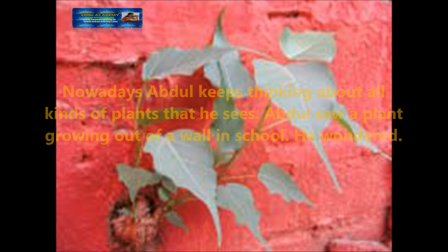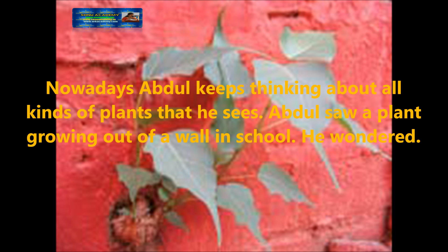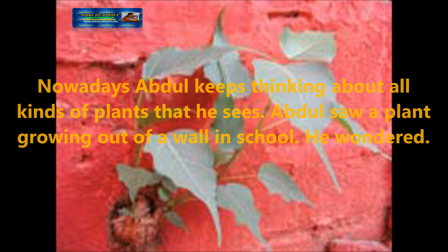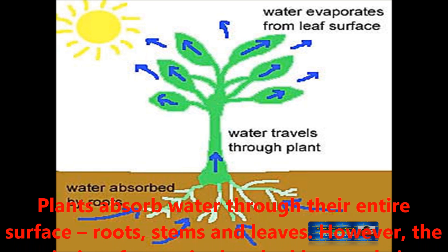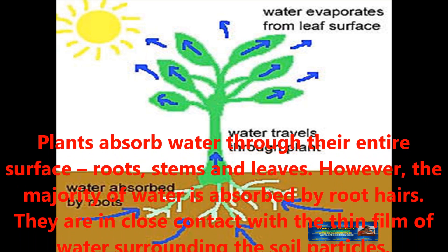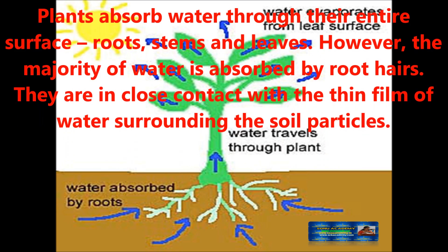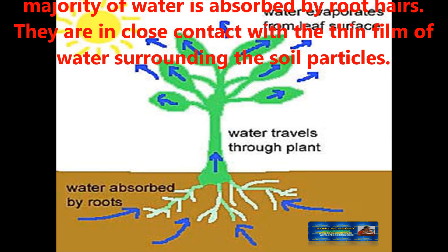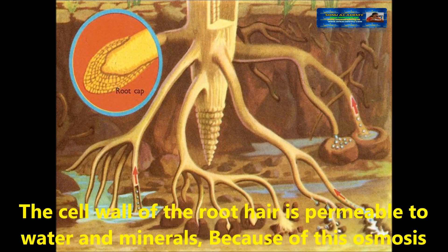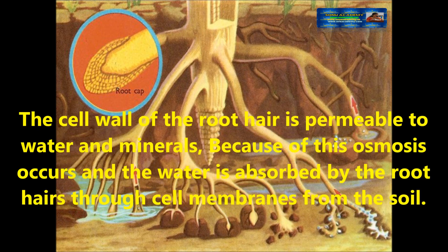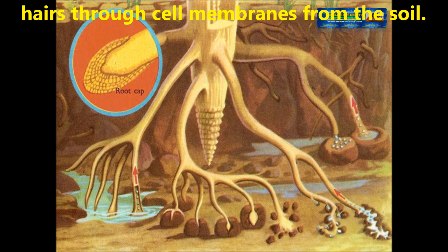Nowadays, Abdul keeps thinking about all kinds of plants. Whatever he sees, Abdul saw a plant growing out of the wall in school. He wondered, how does the root absorb water? The plant absorbs water through its entire surface — roots, stems and leaves. However, the majority of water is absorbed by root hairs. They are in close contact with the thin film of water surrounding the soil particles. The cell wall of the root hair is permeable to water and minerals. Because of this, osmosis occurs and the water is absorbed by the root hairs through cell membranes from the soil.